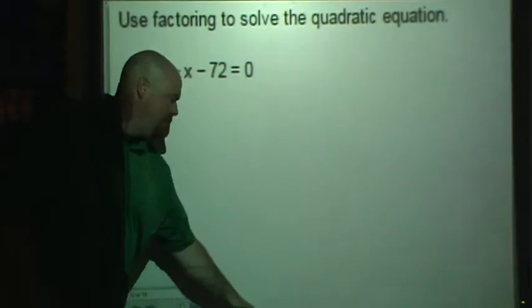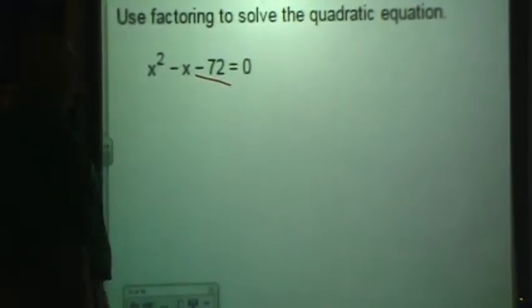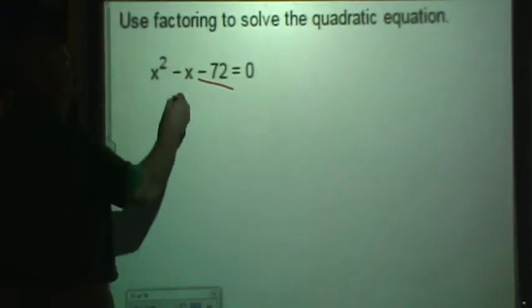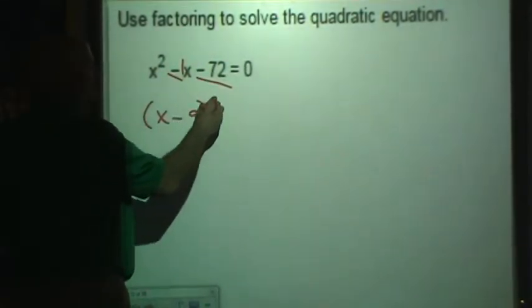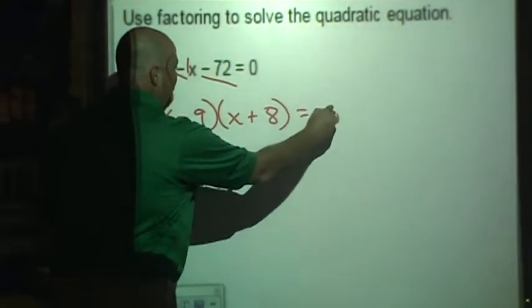So if we're looking to factor this, we're trying to find two numbers that multiply to be negative 72 and add to be negative 1. Those two numbers would be negative 9 and positive 8.